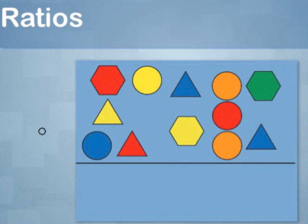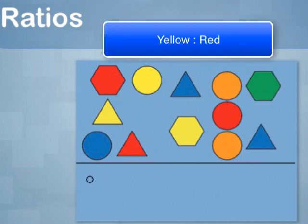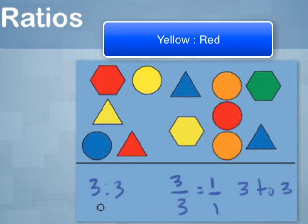But we can also look at the ratio of colors. The ratio of yellow objects to red objects is three to three, or three-thirds, or three to three. When written as a fraction, three to three is really the same as one over one. So that the ratio of red to yellow is one to one.